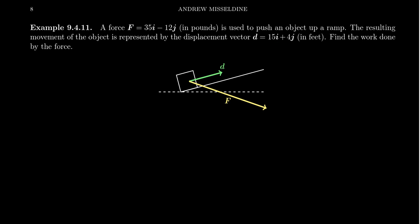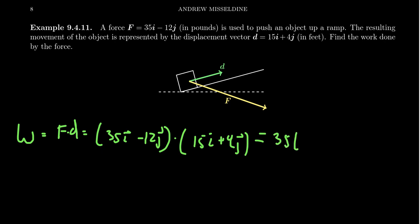To find the work, it's just the dot product of F and d. We get (35i minus 12j) dot (15i plus 4j). Multiply together the horizontal components: 35 times 15. Multiply together the vertical components: negative 12 times 4.